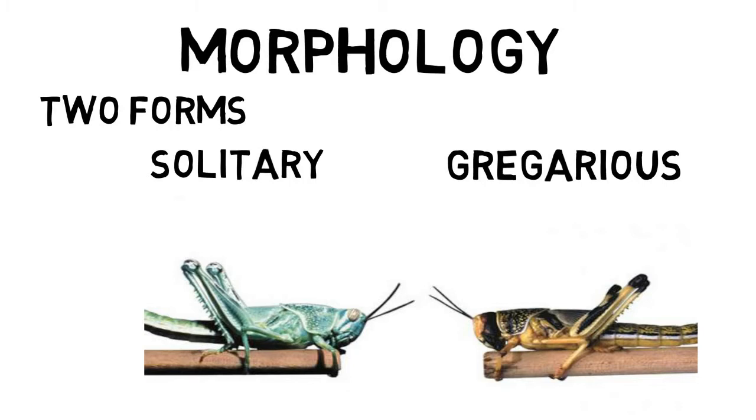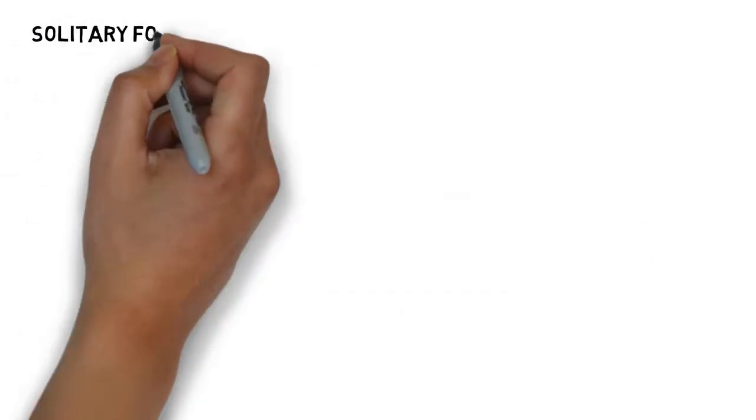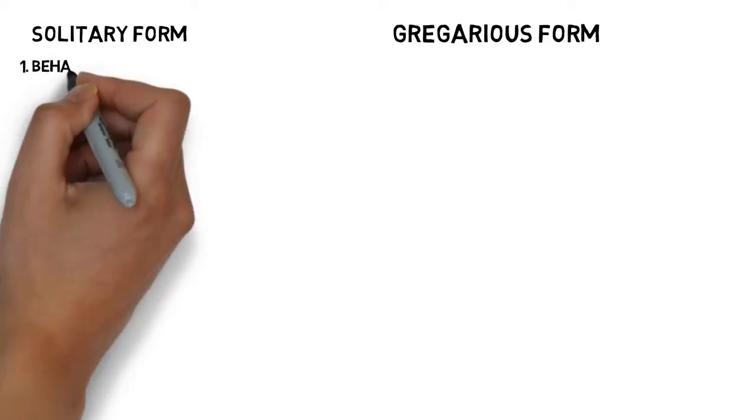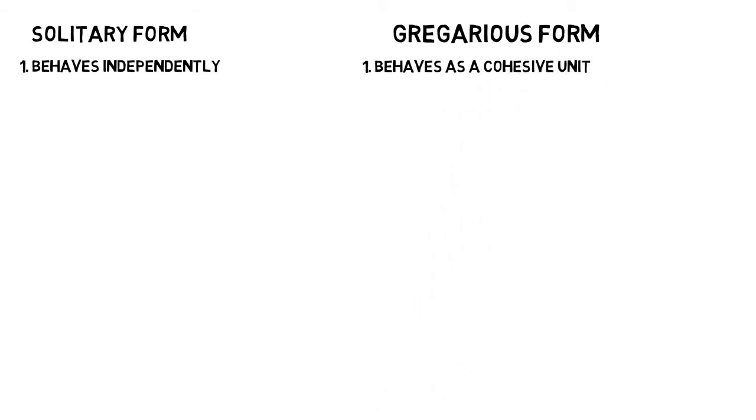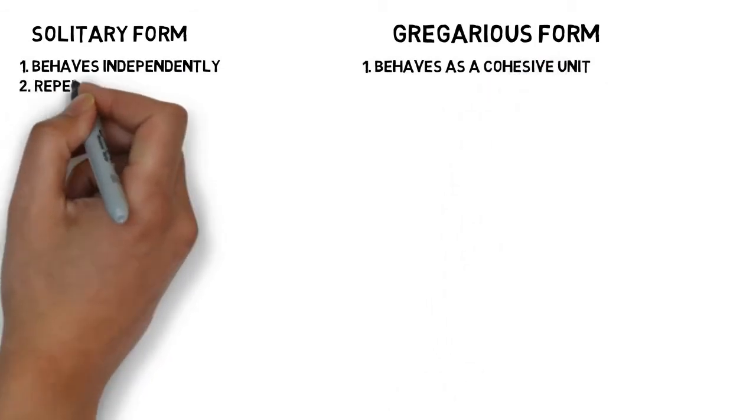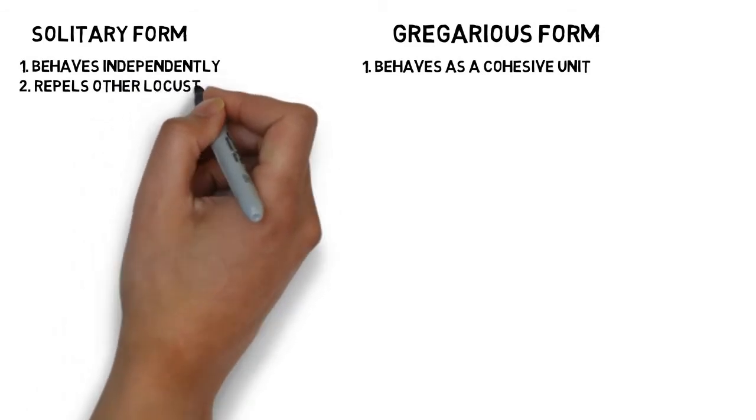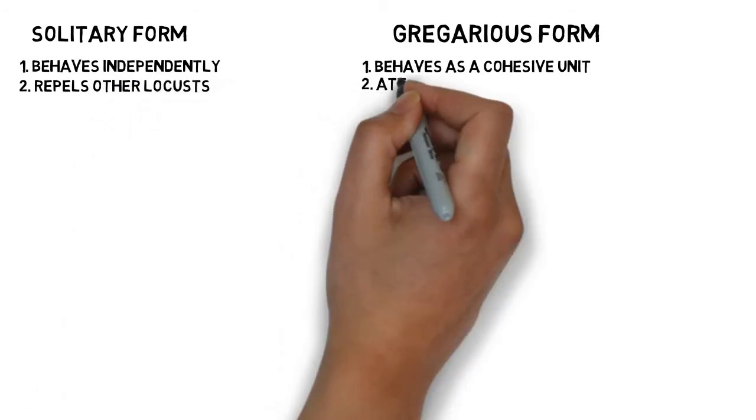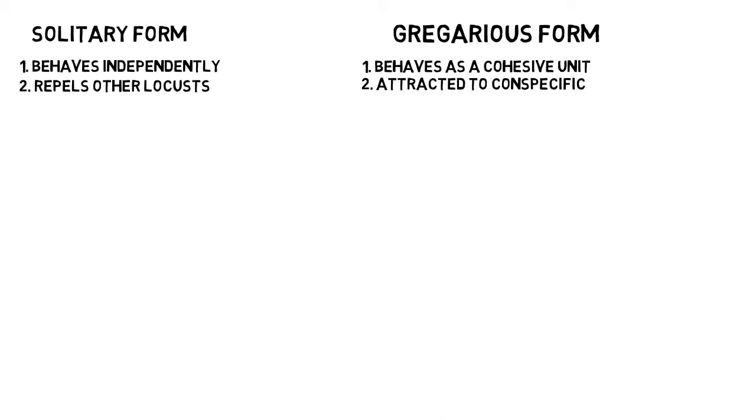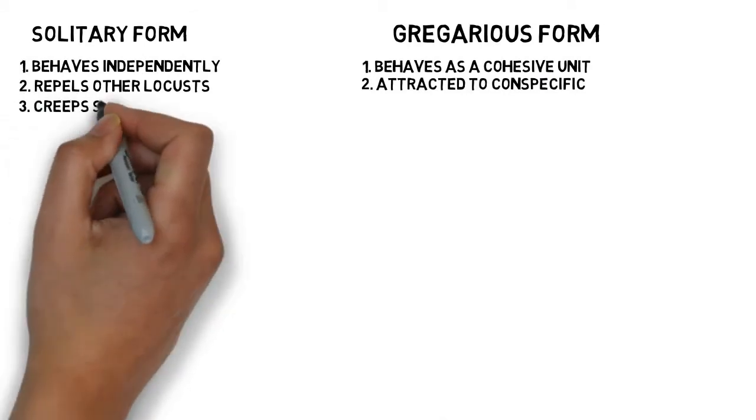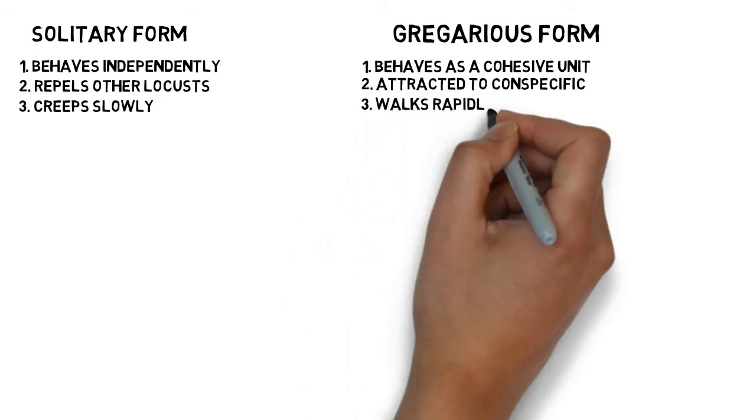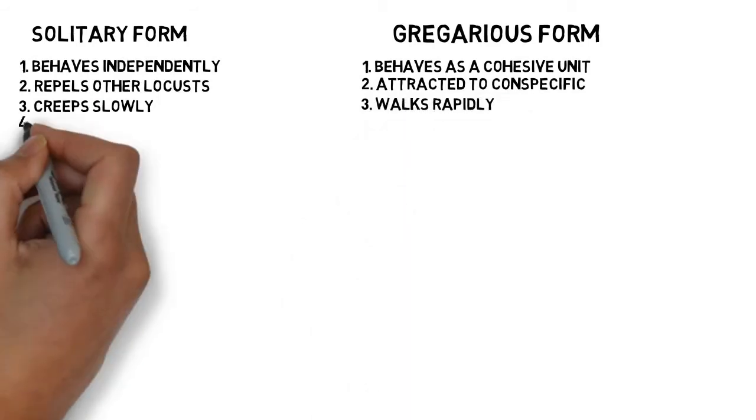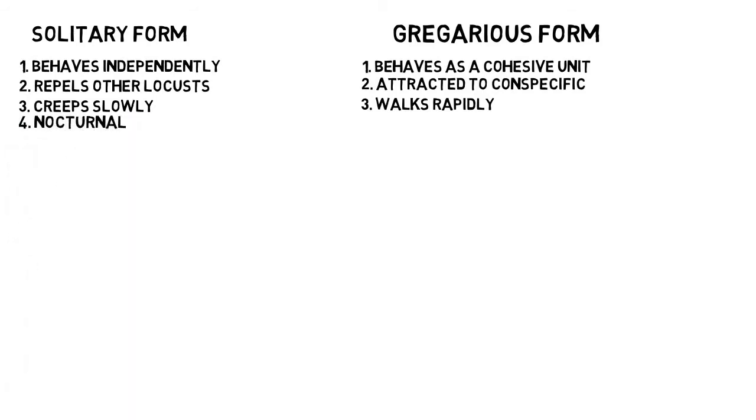The gregarious form male is yellow with reddish markings, whereas the female is light brown in color. Let's take a look at the difference between these phases. The solitary form behaves independently, whereas gregarious form behaves as a cohesive unit. Solitary form repels other locusts and prefers to be alone, whereas gregarious form is attracted to conspecifics and prefers to be in groups. Solitary form walks slowly by creeping, whereas gregarious form walks rapidly.